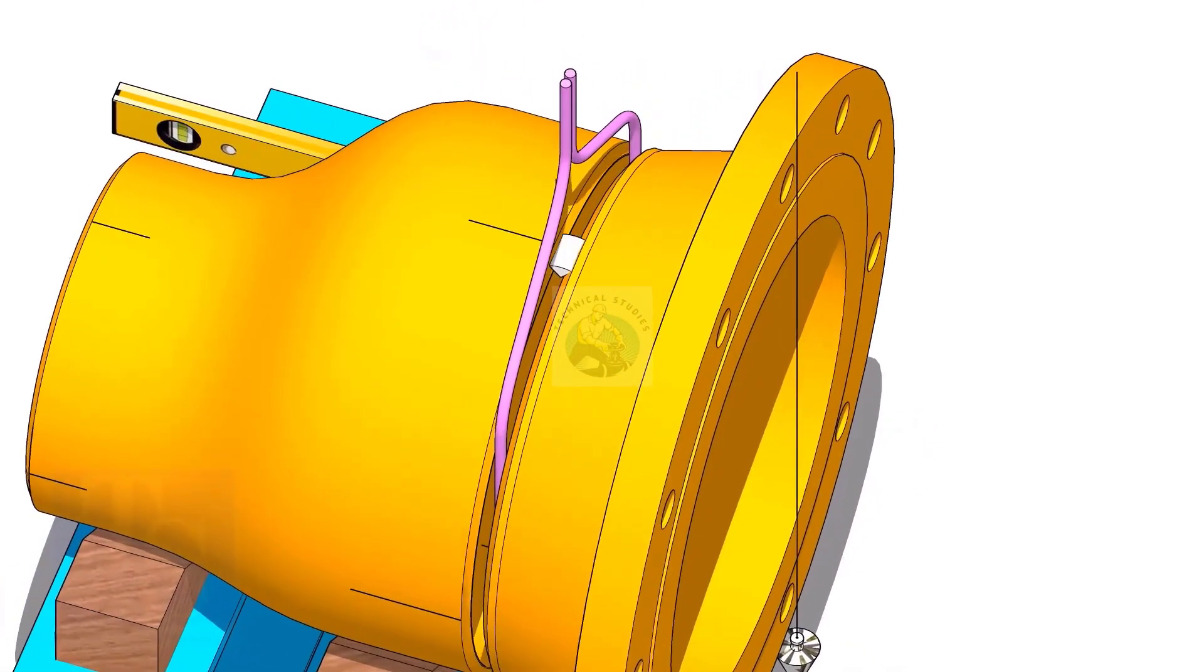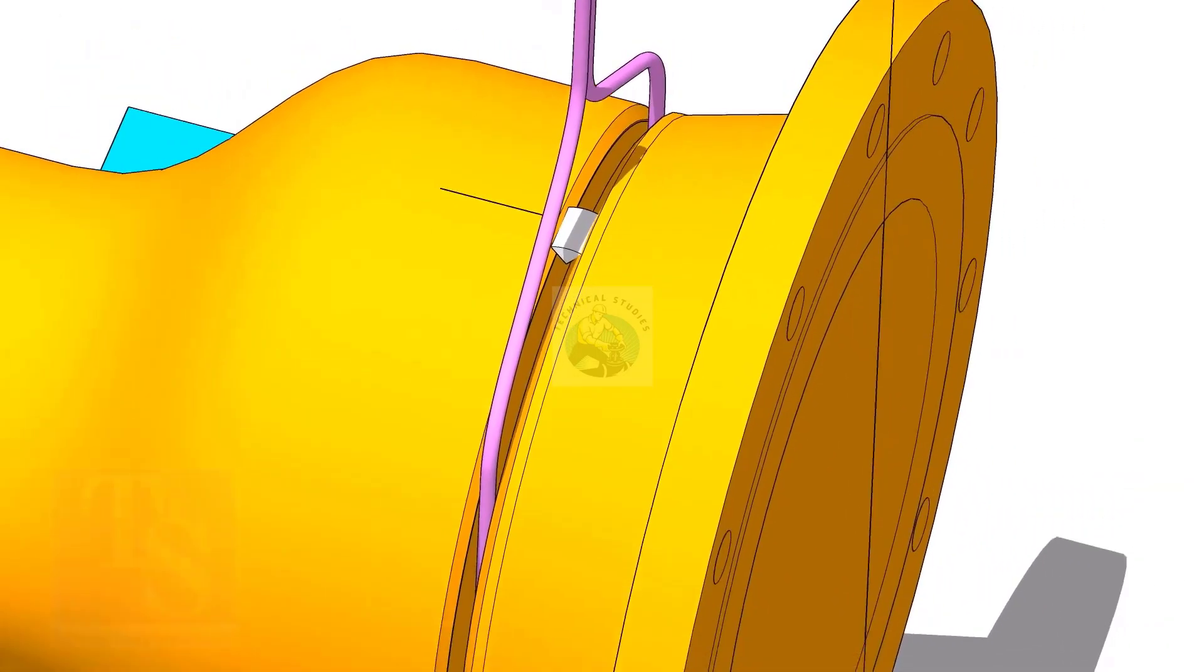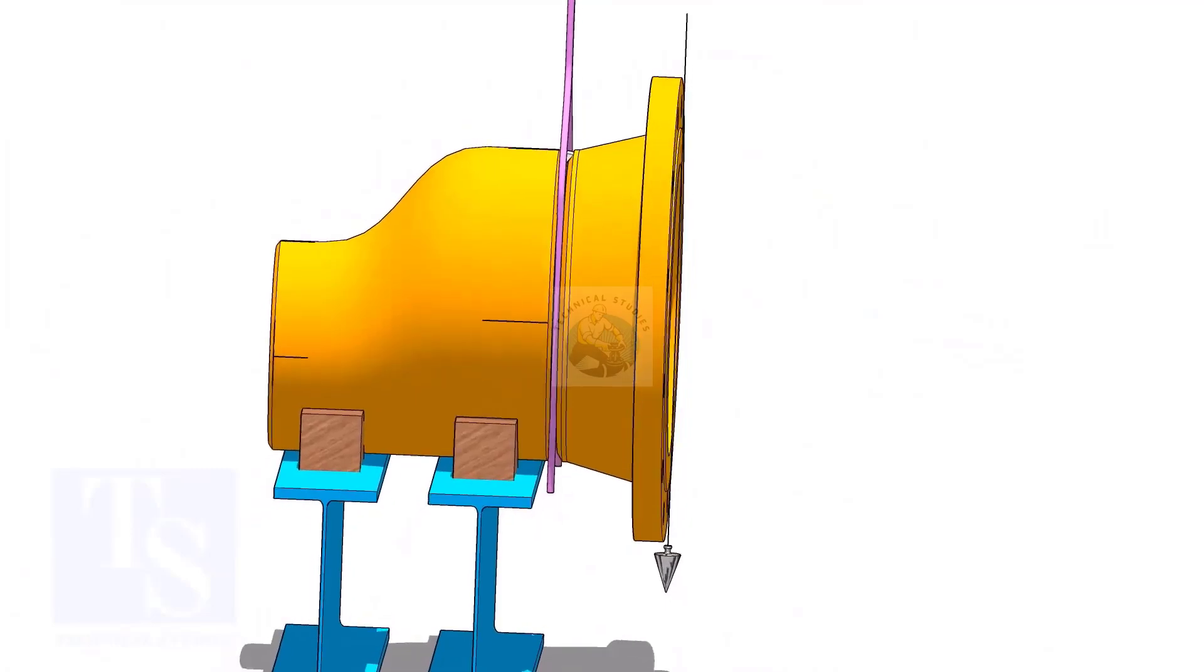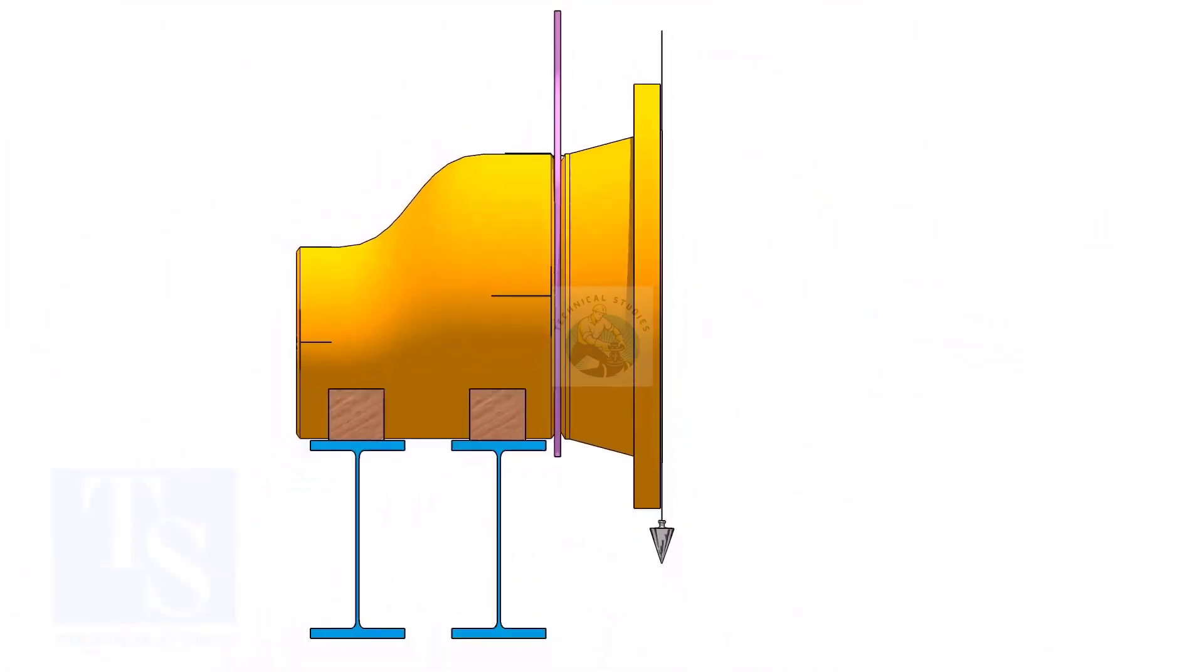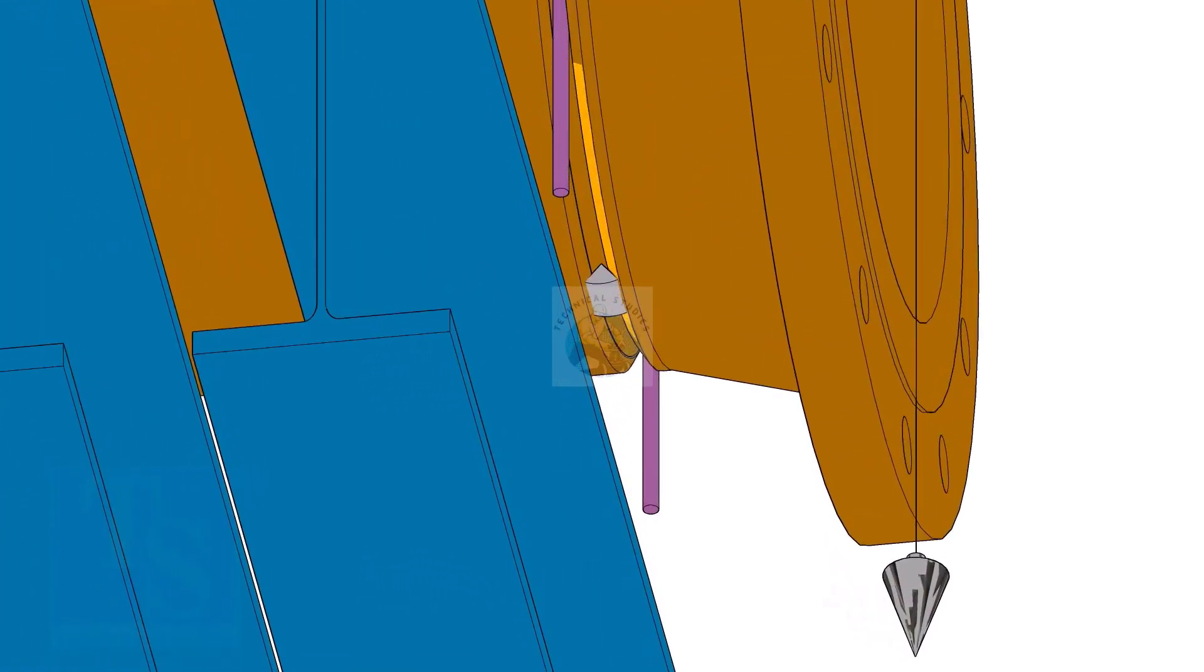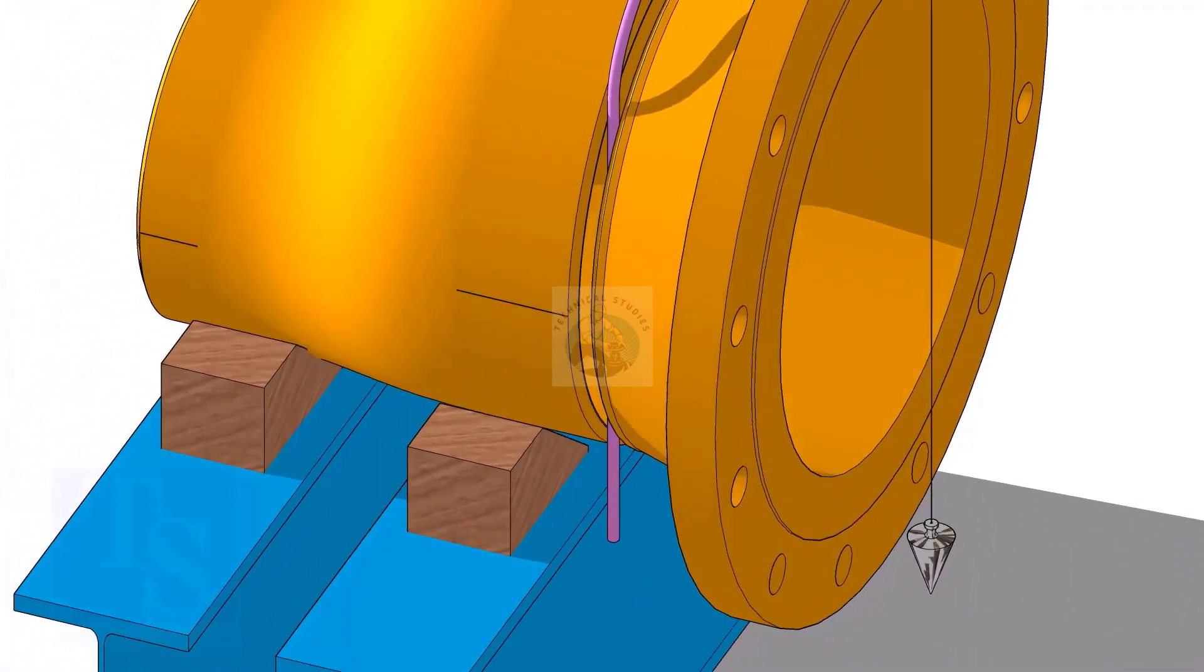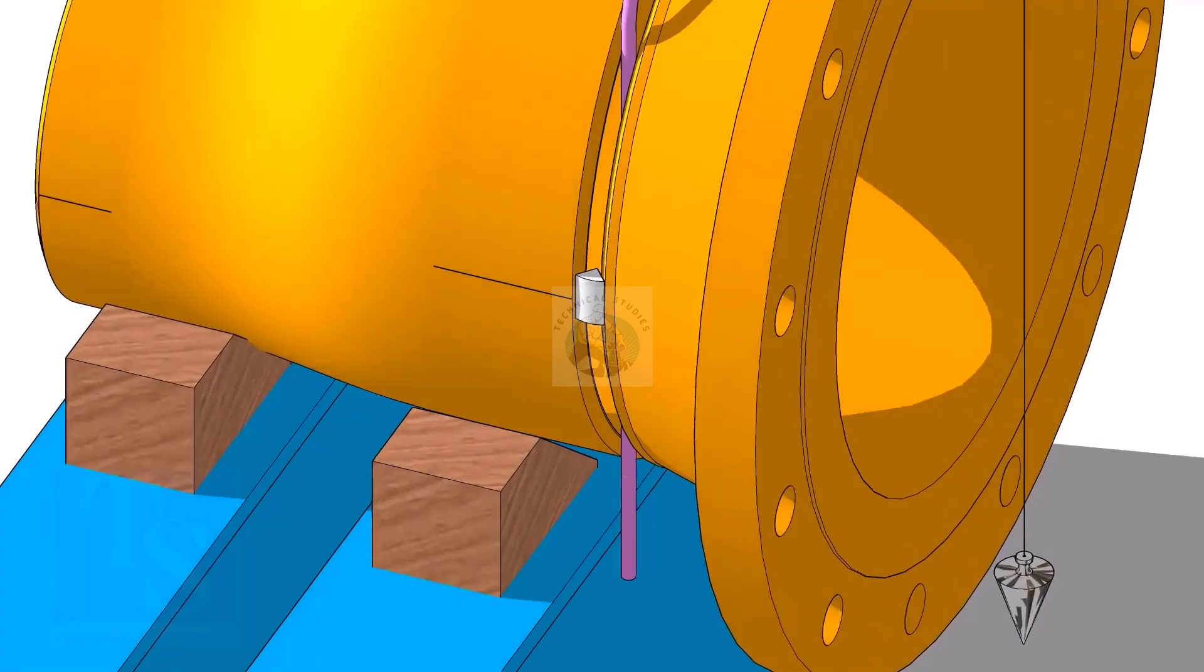Tack weld on the top side of the joint. Check the vertical plumbness. If correct, tack weld at the bottom side. If the gap is correct, tack weld on the sides.